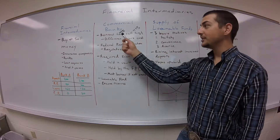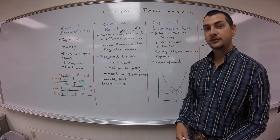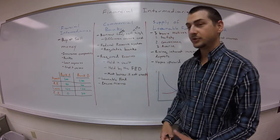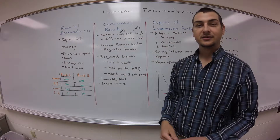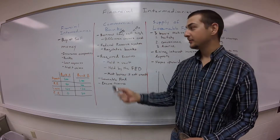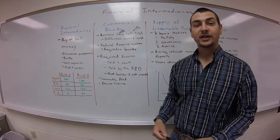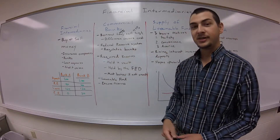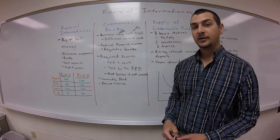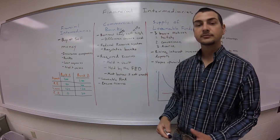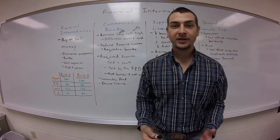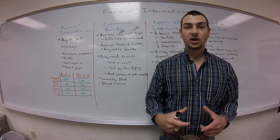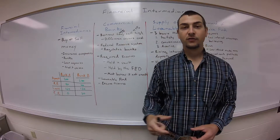Hopefully the difference between these two interest rates is enough to cover the cost. Then we have the Federal Reserve System. The Federal Reserve System is tasked with regulating these commercial banks, or regulating the U.S. banking system. The Federal Reserve System came in and set up a requirement of required reserves. What required reserves are is every bank is required to keep a certain percentage of all deposits on hand to cover withdrawals.